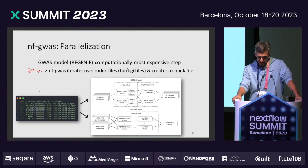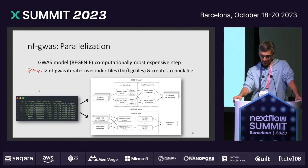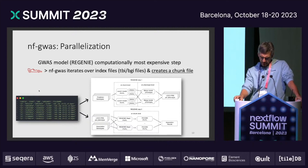Parallelization is also a key thing here — we played around with that quite heavily. The GWAS model itself is the most expensive step computationally. How we do that at the moment: we iterate over the index files, create a chunk file, and then we parallelize both Regenie steps — step one and step two. Step one is the best practice which the authors of Regenie have on their website, and step two uses the chunk file, doing that for all phenotypes at once, and then splitting by phenotype later on.